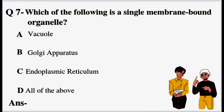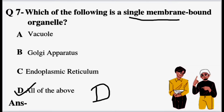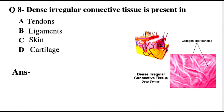Question number 7: Which of the following is a single membrane bound organelle? Option A: Vacuole, Option B: Golgi apparatus, Option C: Endoplasmic reticulum, Option D: All of the above. All three — vacuole, Golgi apparatus, and endoplasmic reticulum — are bounded by a single membrane. So Option D, all of the above, is the right answer. Students should also note which organelles are double membrane bound in the cell chapter.